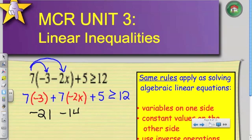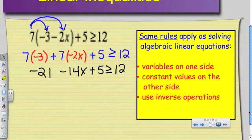Negative 14x plus 5 is greater than or equal to 12. Now, just like algebraic expression, I want all the variables on one side and all the numbers on the other side.